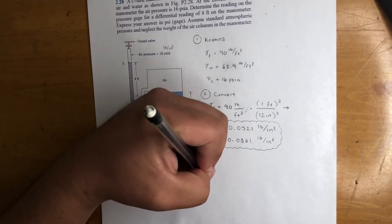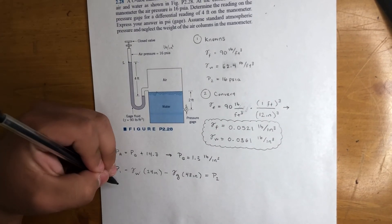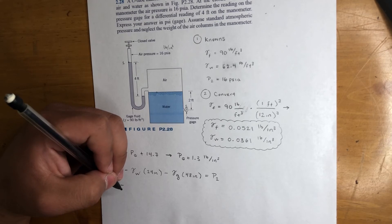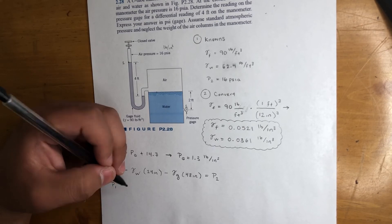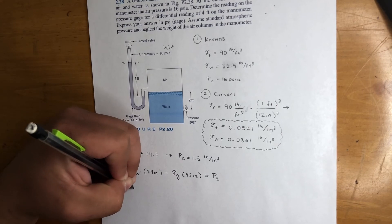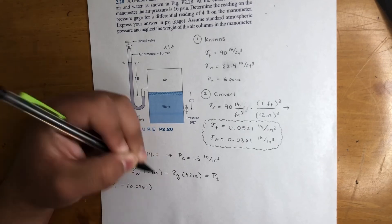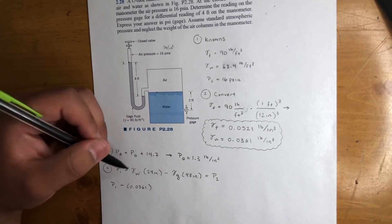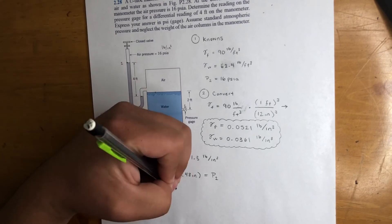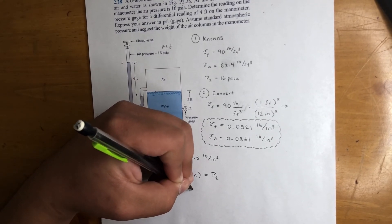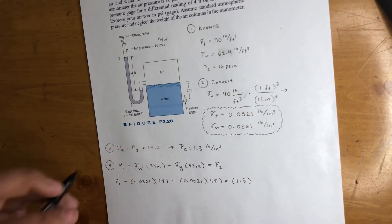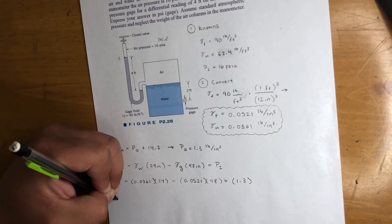And that is going to equal our destination, p2. Okay, so p1 we're looking for minus our gamma of water. And then, yeah, sorry, gamma of water. So that was 0.0361—I'm not going to put the units right—pounds per cubic inch. When you multiply by an inch, you get a pressure unit, pounds per square inch. So times 24 minus gamma of that one, 0.0521, times 48 is equal to 1.3.